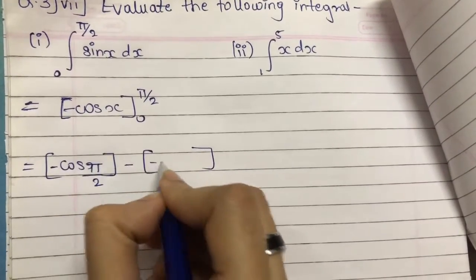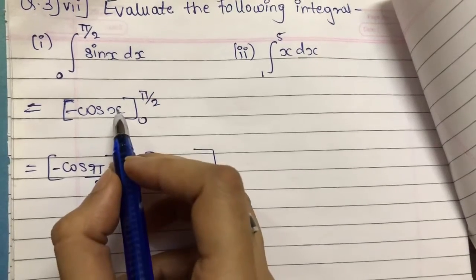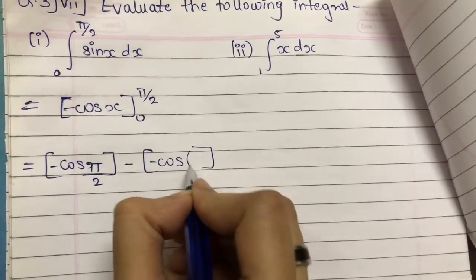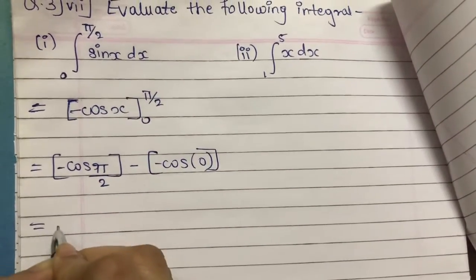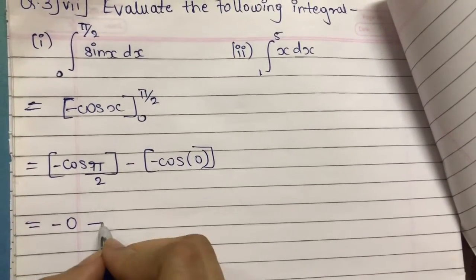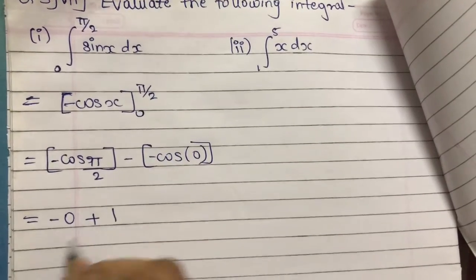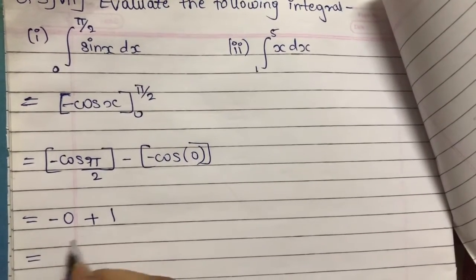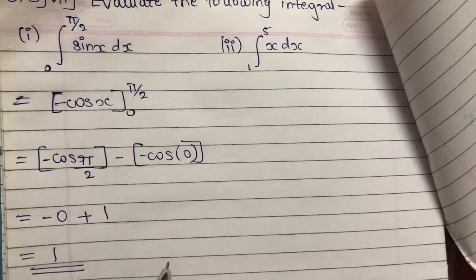Then again minus cos, the value of lower limit at place of x. So cos of 90 is 0, so minus 0, minus, minus plus, cos of 0 is 1. So it is of course plus 1.